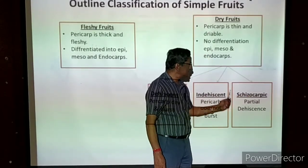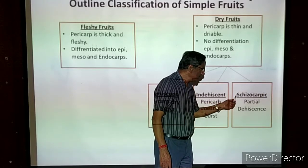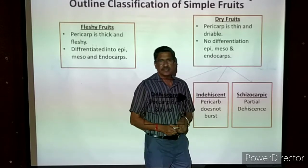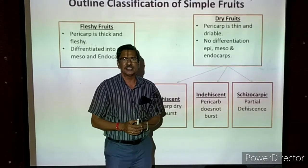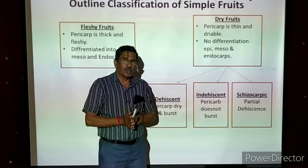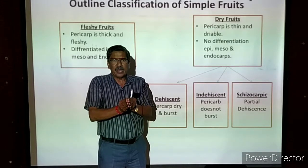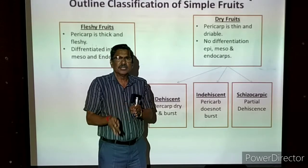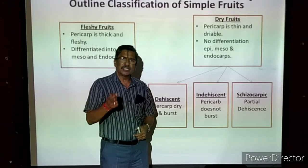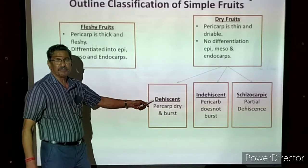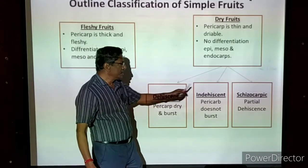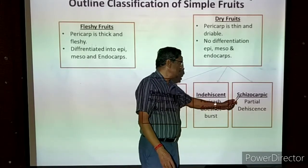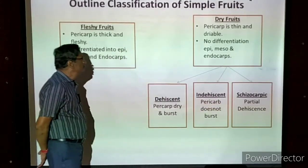The last type is schizocarpic dry fruits. Here the pericarp is drying and makes a partial dehiscence — after thorough drying, the wall of the pericarp bursts partly. There is little bursting, but through that gap the seeds cannot come out. So it is bursting but not completely like the first type — the seeds are not released. This is called partial dehiscence, and the fruit is called a schizocarpic fruit.